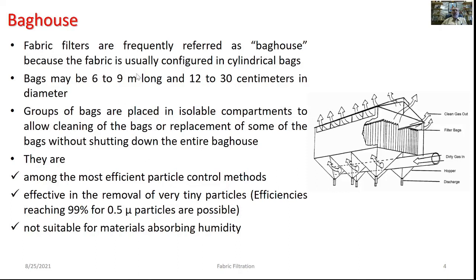Fabric filters are referred to as baghouses because a house-like assembly accommodates an assembly of cylindrical bags. These bags could be 6 to 9 meters long with a diameter of 12 to 30 centimeters. This group of bags is placed in isolable compartments to allow cleaning or replacement of some bags without shutting down the entire baghouse. Baghouses are among the most efficient particulate control methods, capable of removing particles as small as 0.001 micron.